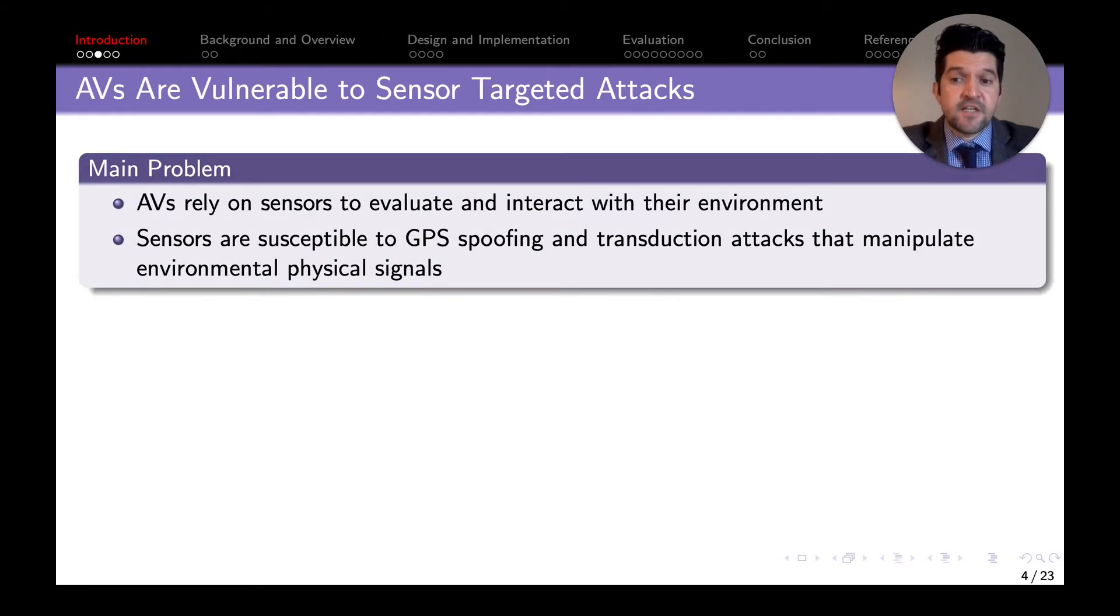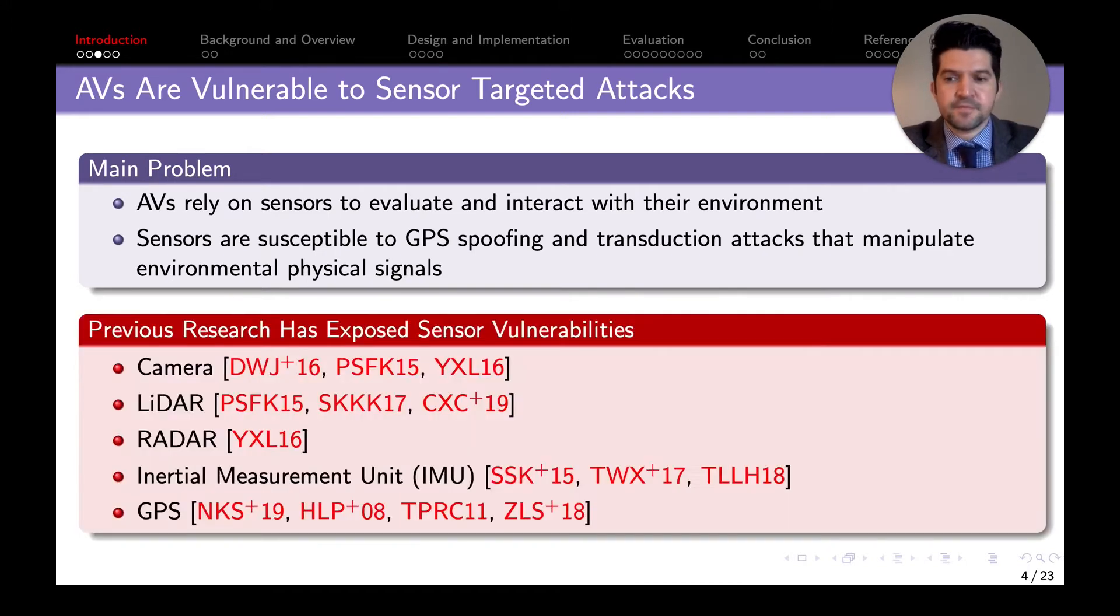AVs are vulnerable to sensor-targeted attacks, mainly because of their reliance on sensor information. But also, sensors are susceptible to GPS spoofing and transduction attacks that manipulate physical signals. There has been plenty of research that has explored these vulnerabilities in cameras, lidars, radars, IMUs, and GPS.